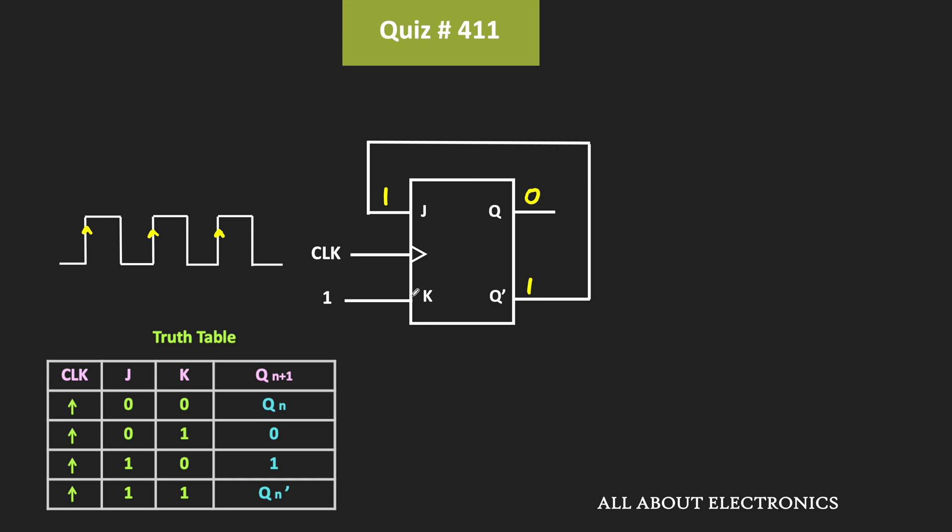when both inputs are 1, then the output of the flip-flop will toggle. That means now, this Q will become 1, while the Q' will become 0.